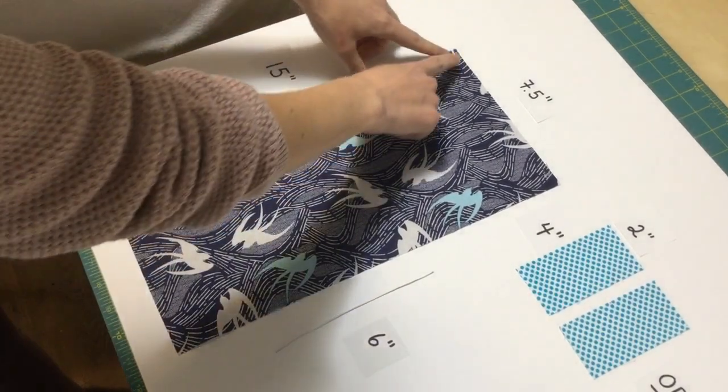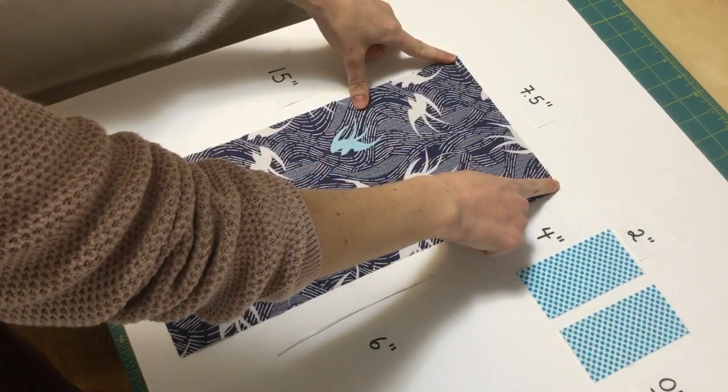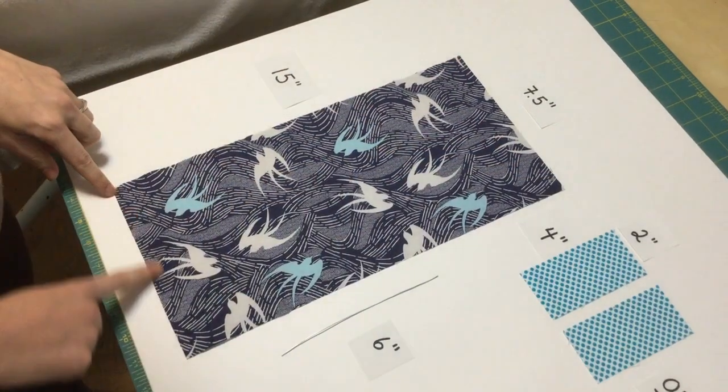The very first step is to use a zigzag stitch or your serger to finish these short edges.